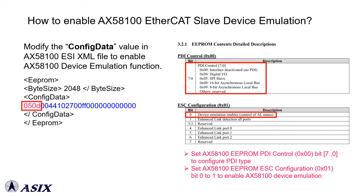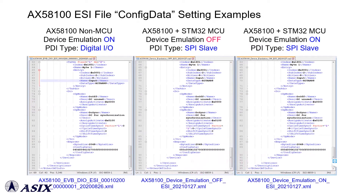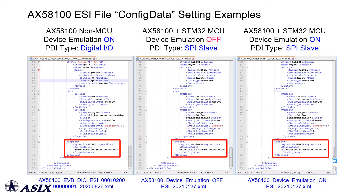Designers can modify the config data value in the AX58100 ESI file to set the EEPROM ESC configuration field bit 0 to 1 to enable EtherCAT device emulation mode, and set the PDI control field to configure a proper PDI type. These are sample AX58100 ESI file config data configurations for different AX58100 EtherCAT Slave applications.